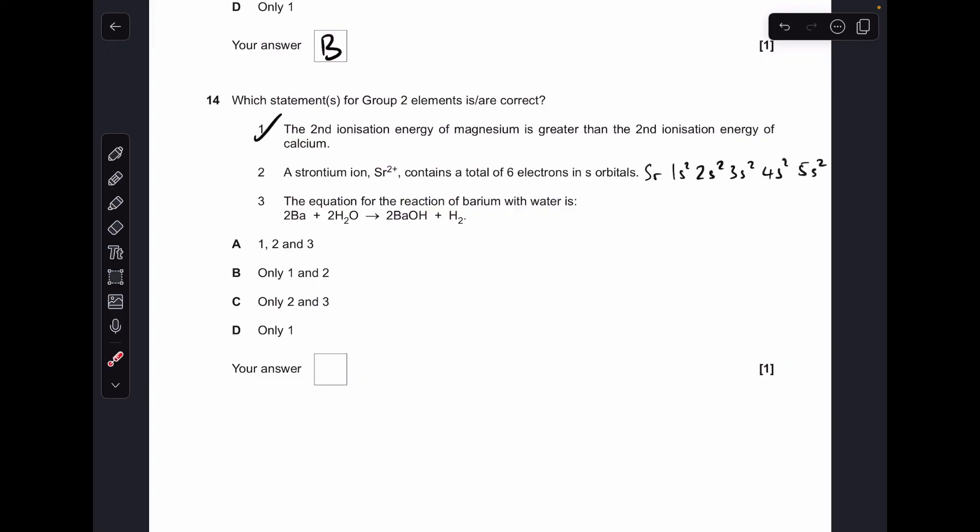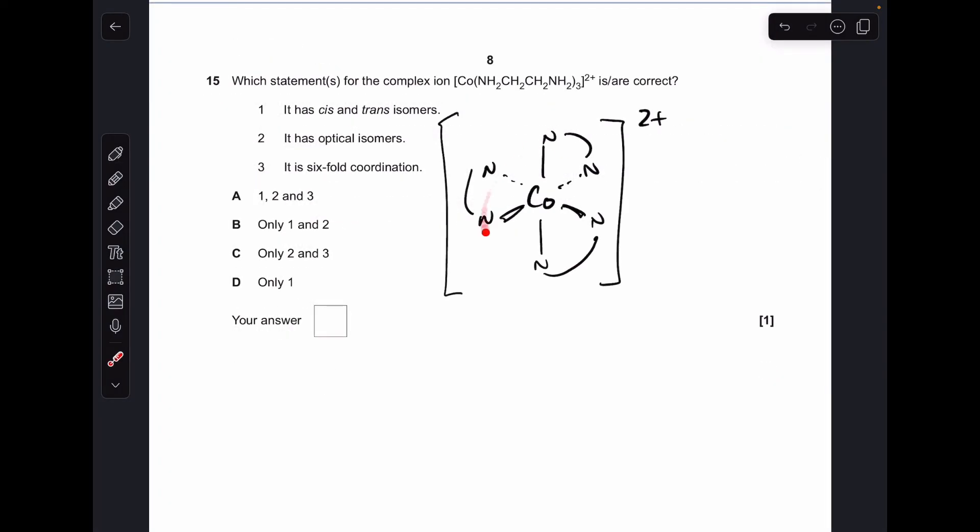Number two, strontium 2+ ion contains six electrons in s orbitals. So a strontium atom, it's in period five, so you've got s electrons in 1s through to 5s. So when it forms its 2+ ion, we're going to lose those. So this one's got eight electrons in s orbitals, so that's wrong. Number three, is that the right equation for barium with water? No, it's not, because the formula of barium hydroxide is wrong. It should be Ba(OH)2. So only one was correct, so D is the answer.